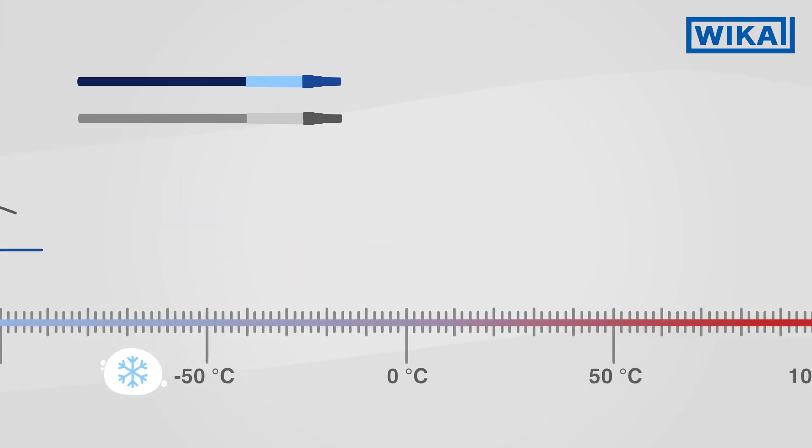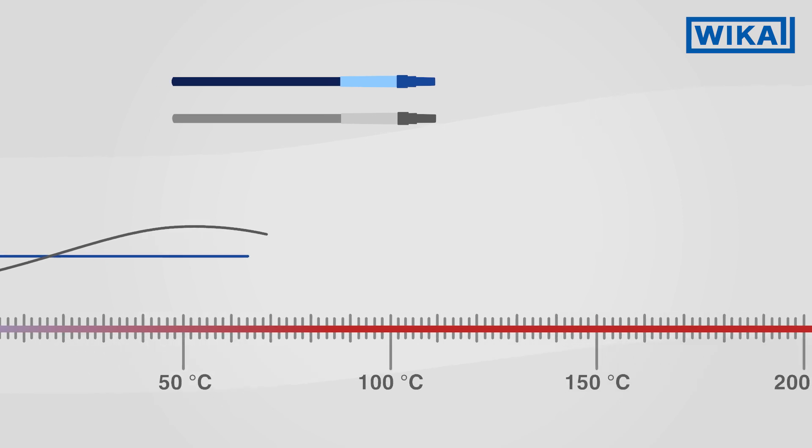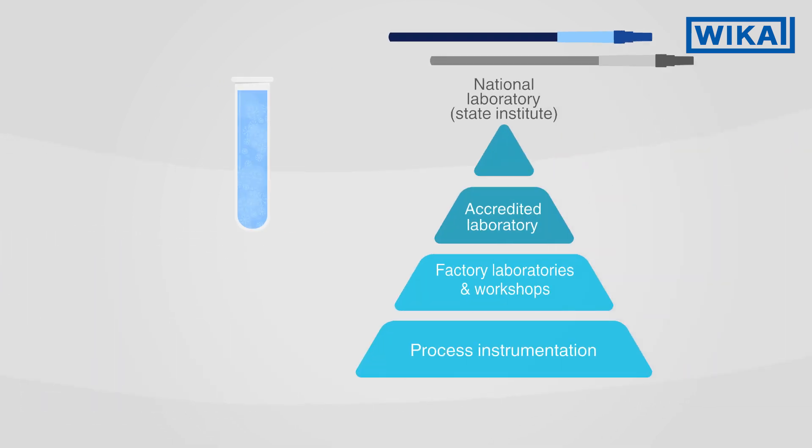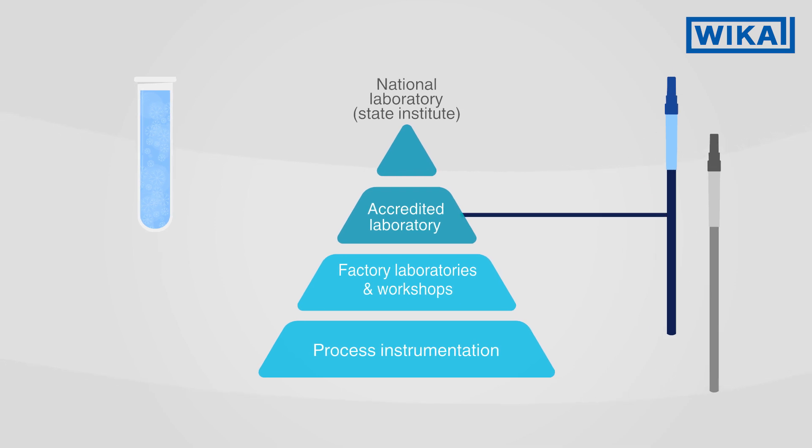At different measuring points, the deviation of the test item from the reference thermometer is determined. The traceability of the reference thermometer enables different levels of accuracy. The measurement uncertainties here are noticeably higher than in fixed point processes.